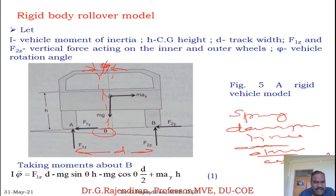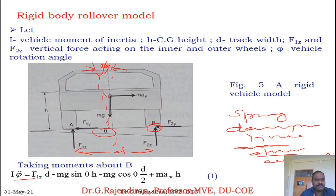I times phi double dot is the angular acceleration — I is the moment of inertia. Taking moments with respect to point B: F1Z into D, minus mg sine theta, and for vertical mg cos theta — here D by 2 and H. So mg sine theta times H, minus mg cos theta times D by 2. The F1Z term is clockwise and the mg cos theta term is anti-clockwise.